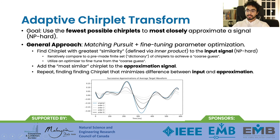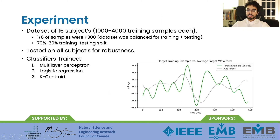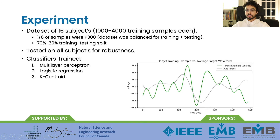The experimental design consisted of a dataset with 16 subjects' P300 data, each with 1,000 to 4,000 samples. 70% of the data was used for training and 30% for testing. Since classifier robustness was a major goal of this study, we trained the classifier on all participants' data, not just a single subject at a time.